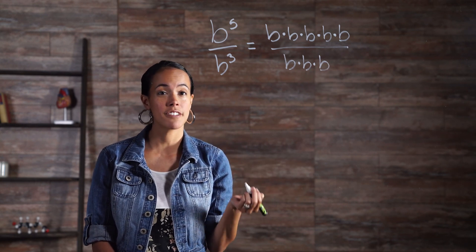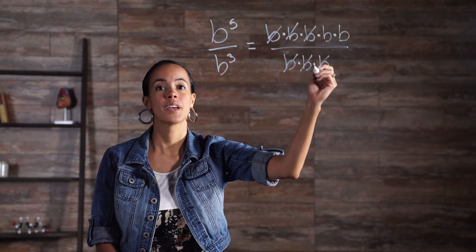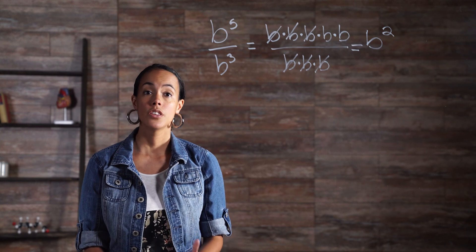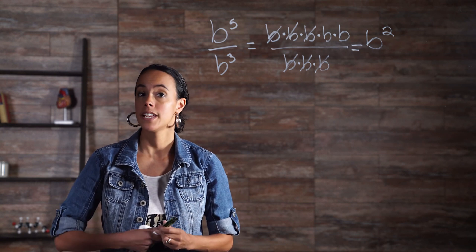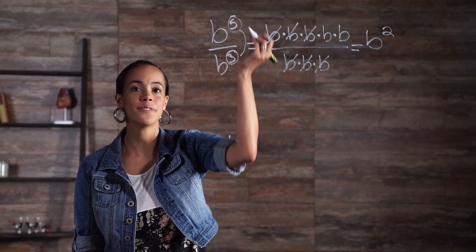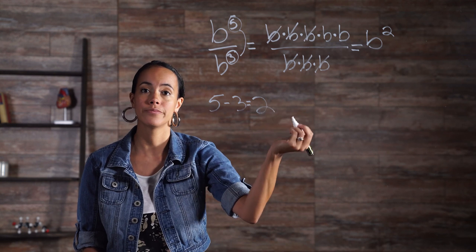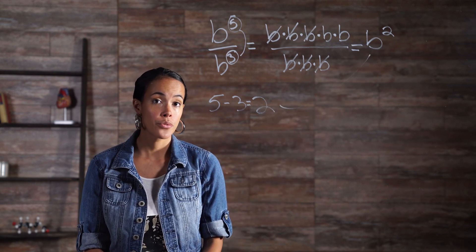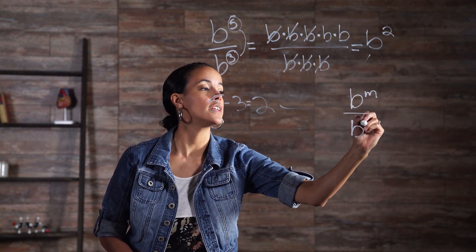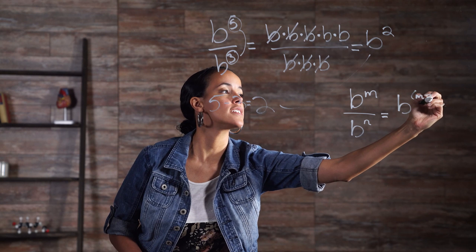Canceling out common factors of b from the numerator, the quotient of powers property allows a quicker, more efficient result. Simply subtract the exponent of the denominator from the numerator: 5 minus 3 equals 2. The general form for the quotient of powers property is b to the m over b to the n equals b to the m minus n.